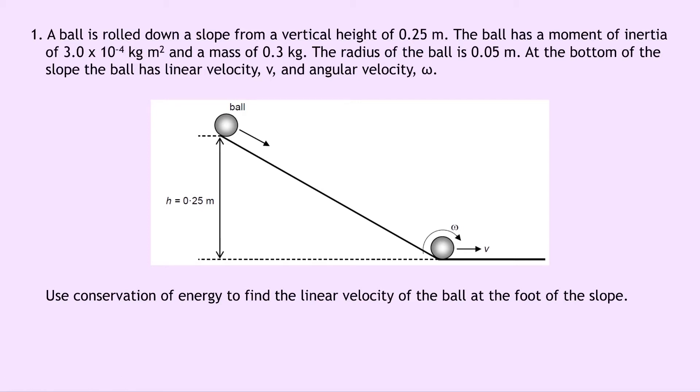And another thing to point out is that when the ball is at the top of the slope, it's going to have maximum gravitational potential energy. Whereas when it's at the bottom of the slope, it's going to have maximum kinetic energy. So we could say that by conservation of energy, the gravitational potential energy that is lost from the ball rolling down the slope is equal to the kinetic energy that is gained.